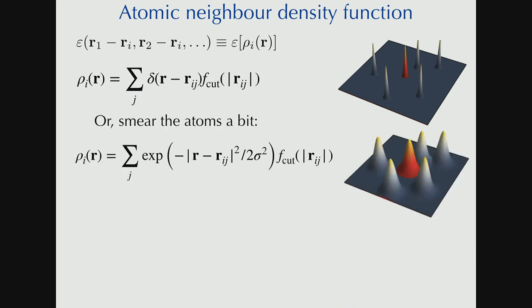Very quickly, one realizes that it's much nicer to work with smeared atoms. Because it's going to lead to much smoother functions when we're going to build functions out of this neighbor density. So, imagine Gaussians placed, centered on your neighbors. And maybe even with a cutoff function that smoothly cuts them off as they exit some radius.